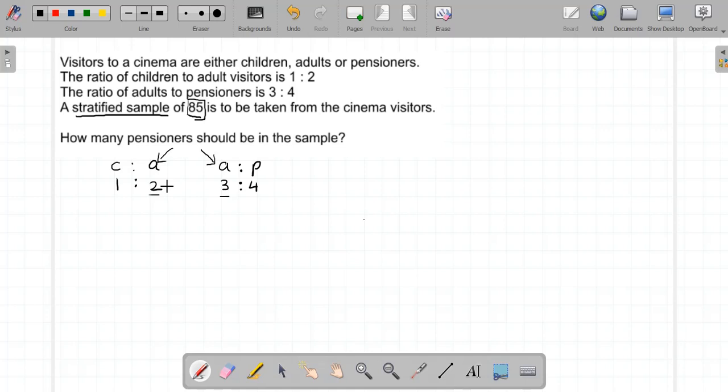To do that, I'm going to multiply this by 3 because this number over here is 3. So that'll become 6. But to maintain C to A as an equivalent ratio, I multiply by 3 as well, so that becomes 3:6.